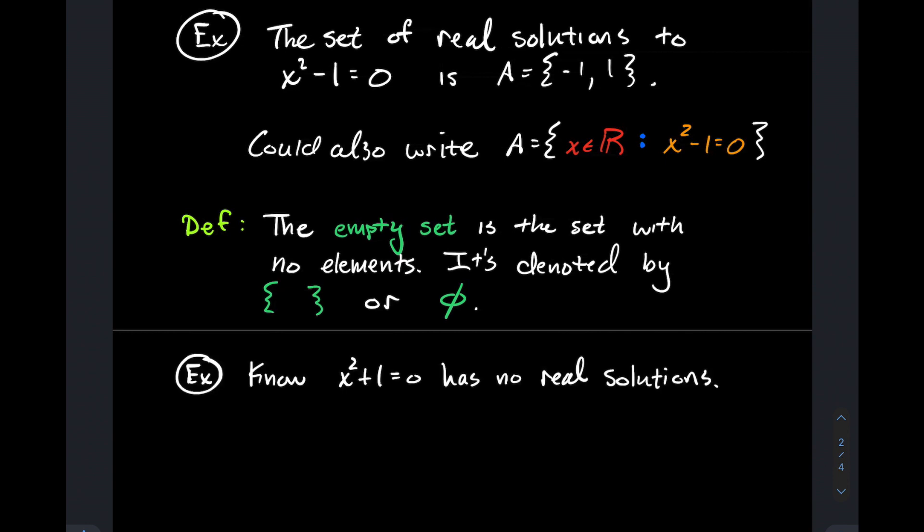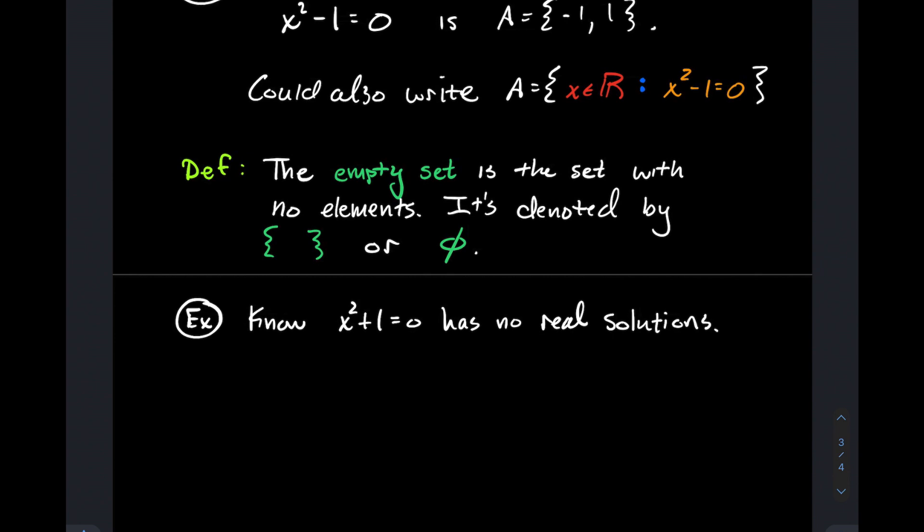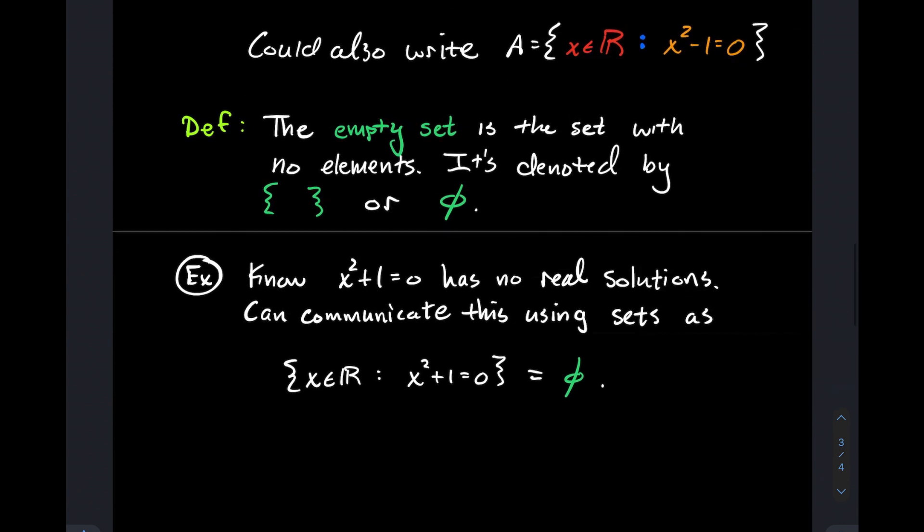Let's look at an example. What if I think about x² + 1 = 0? I know that has no real solutions—that's probably the first time you're introduced to the complex number i. But to describe this particular situation using set theory, we could say: all real numbers x such that x² + 1 = 0, the set of all such numbers is empty. We would say that equals the empty set because there are no such numbers.